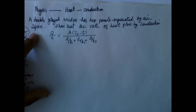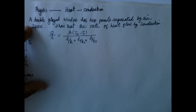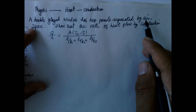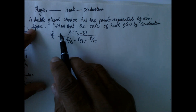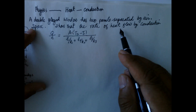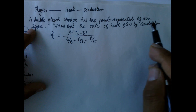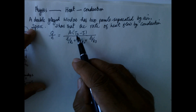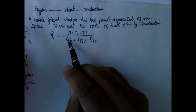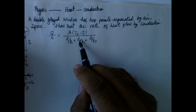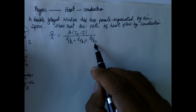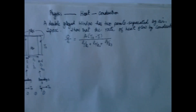Physics. Heat. Conduction of heat. The problem is: a double-glazed window has two panels separated by an air space. Show that the rate of heat flow by the conduction mechanism is given by Q over t equals area times (T2 minus T1) over (L1/K1 plus L2/K2 plus L3/K3).